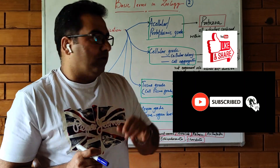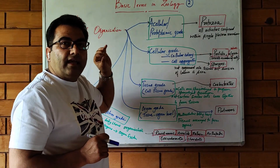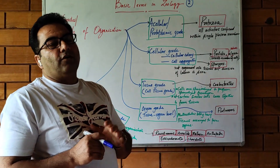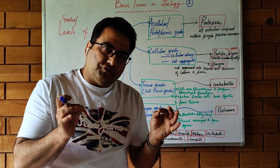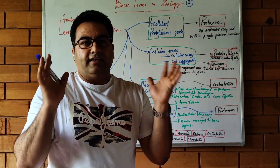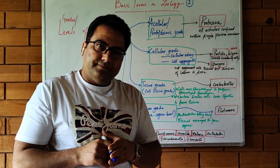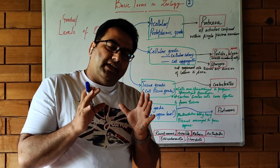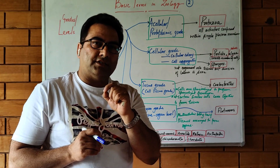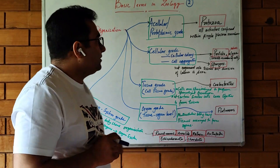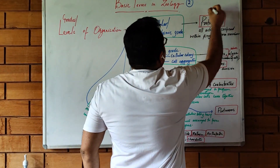The first level is the acellular or protoplasmic grade of organization. In this case, the individual organism is a single cell covered by a single plasma membrane, so all activities take place inside that plasma membrane. This is why we call it the acellular or protoplasmic grade of organization, and it is seen in protozoans.